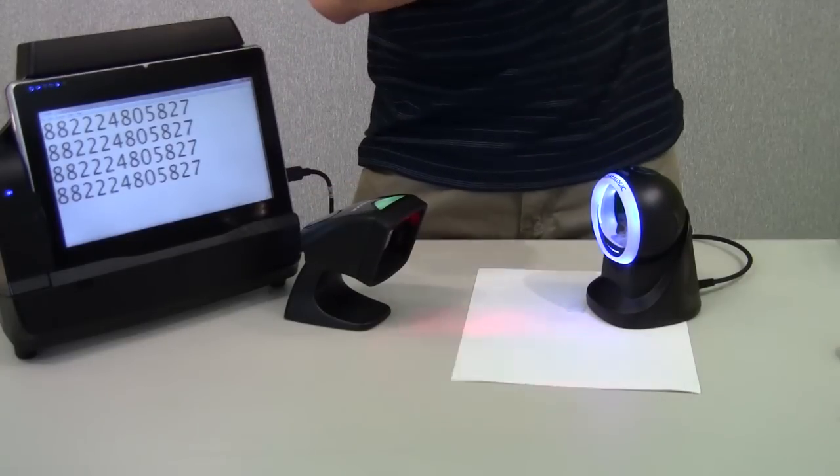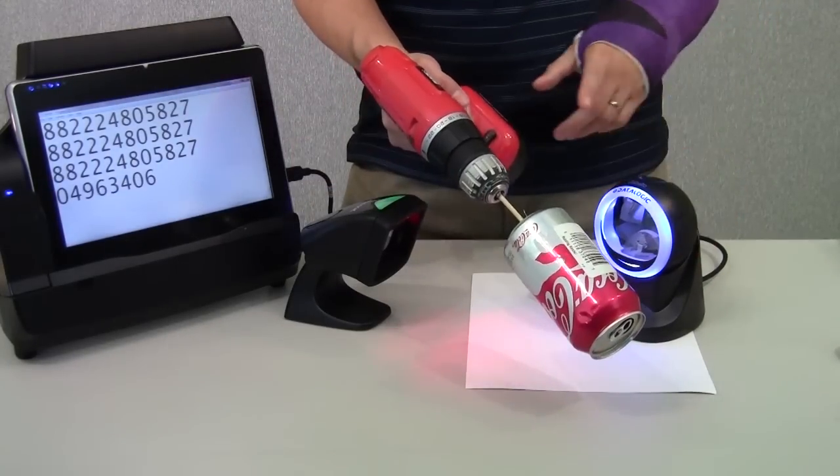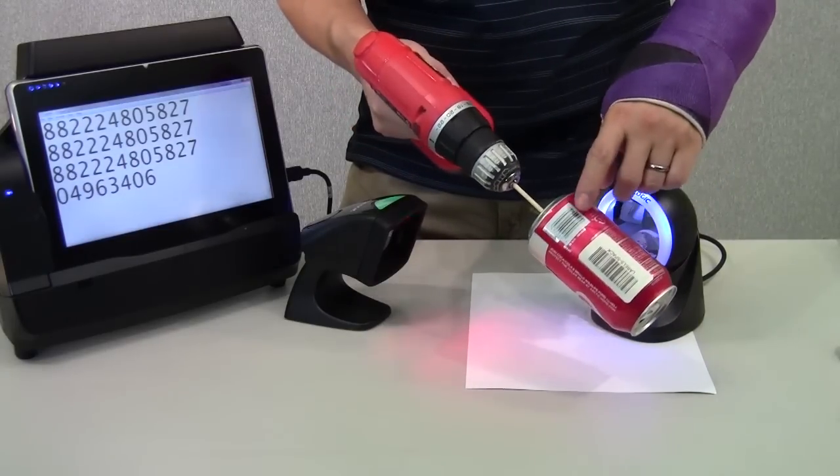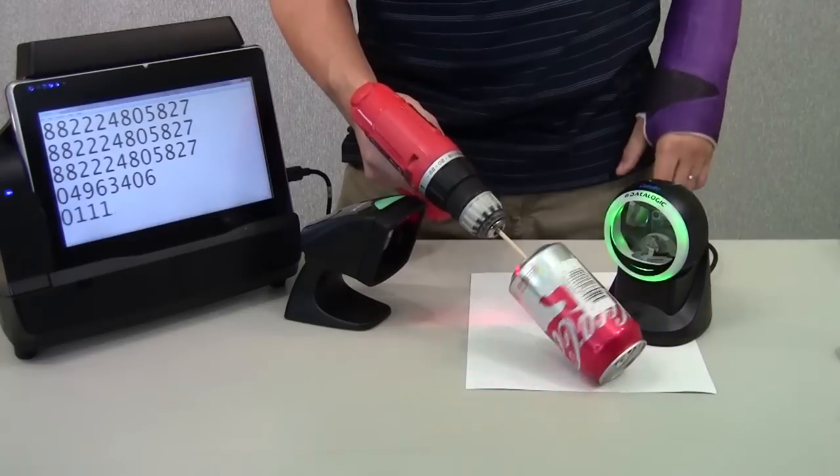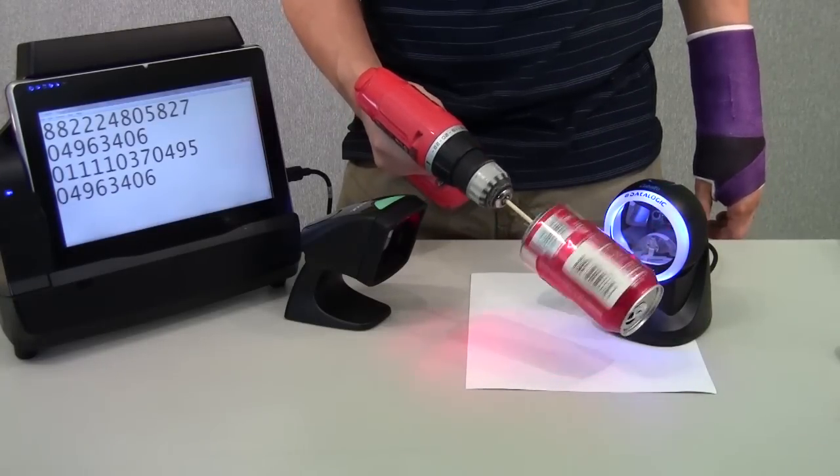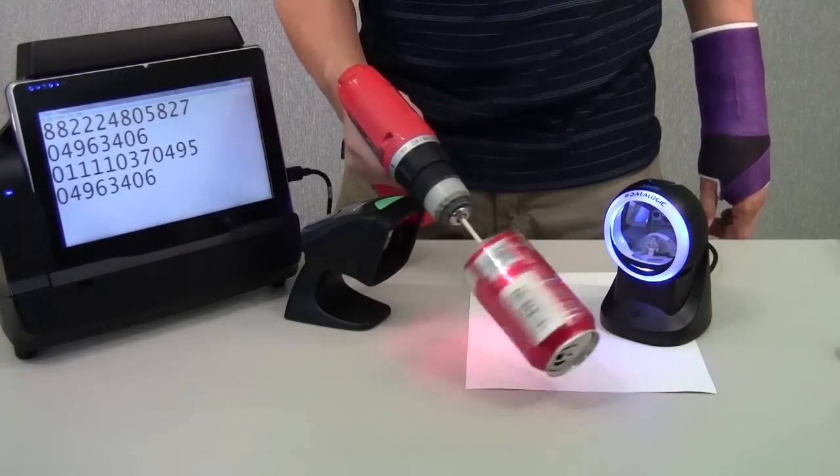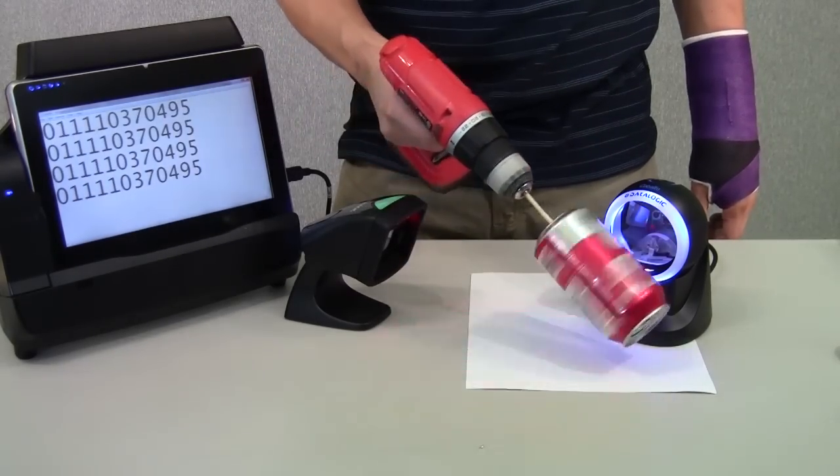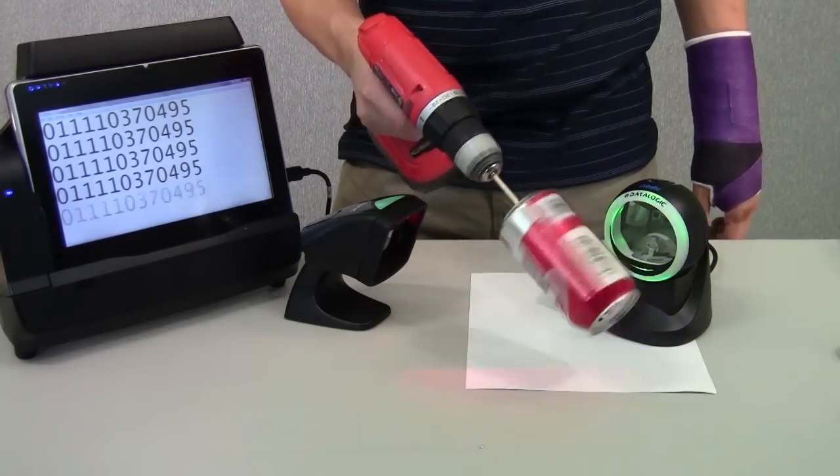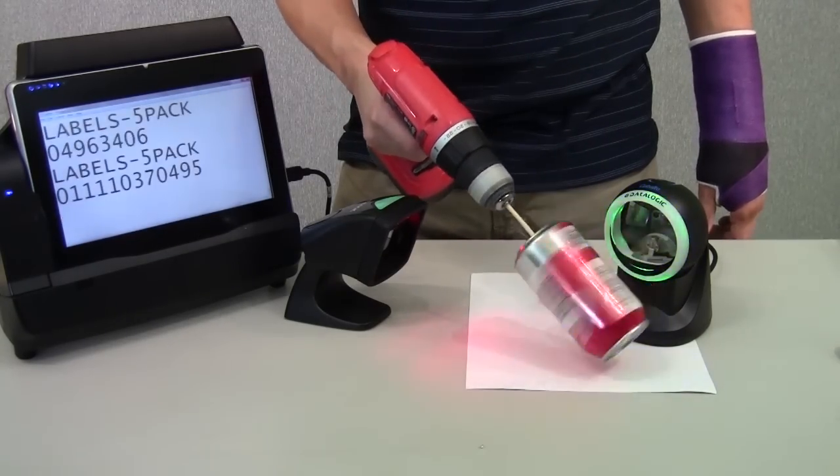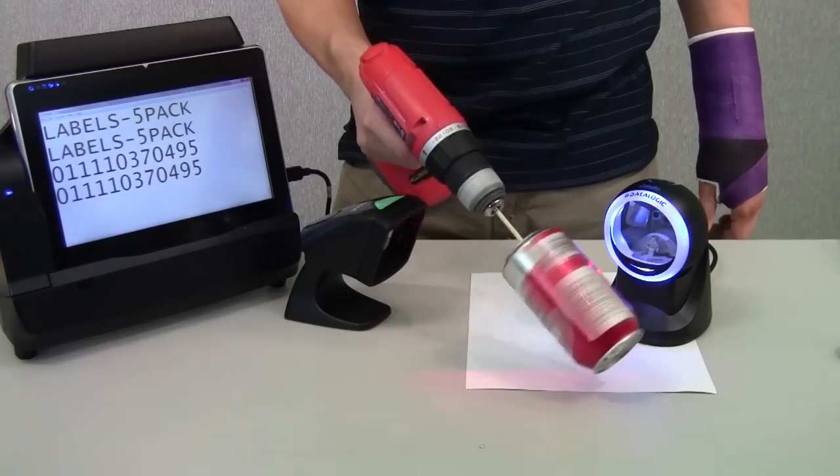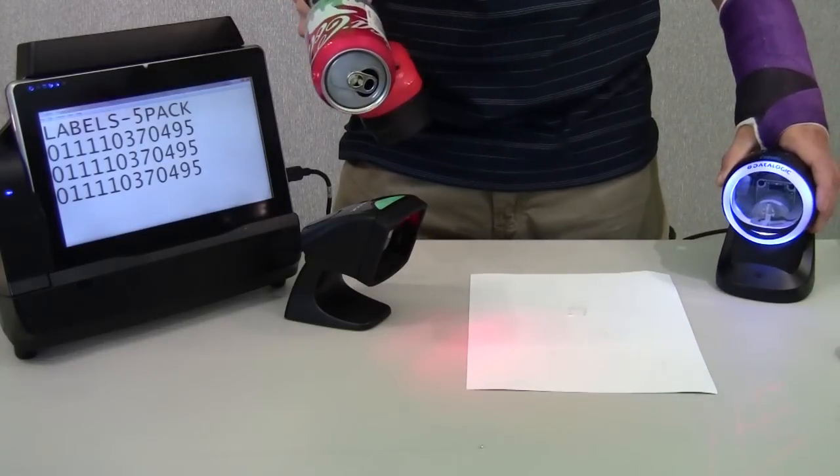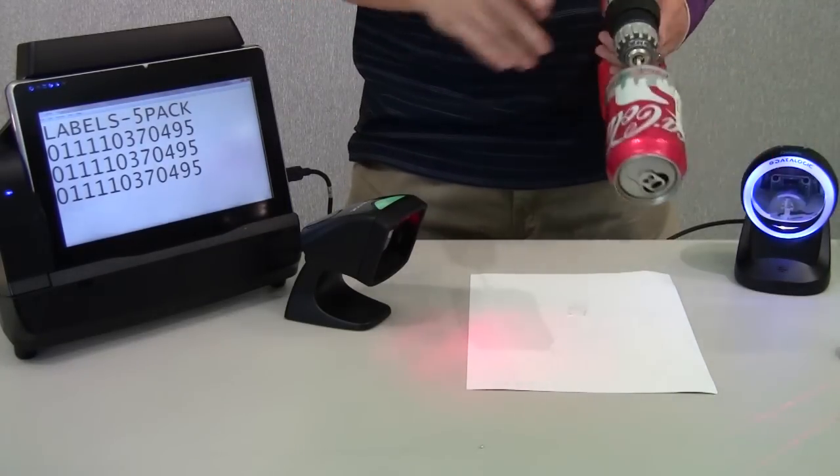I'm going to do a high speed simulation here. I have a drill. I have a barcode printed on it, as well as another barcode there, and then the barcode that's on the can itself. In motion, you can see it's scanning. If I go to higher speeds, it's still able to pick up the barcodes at full speed.